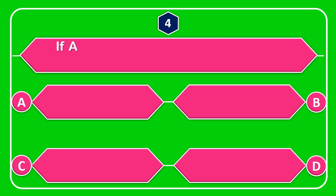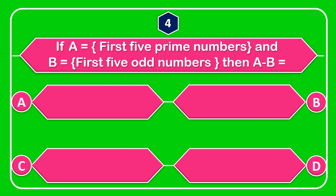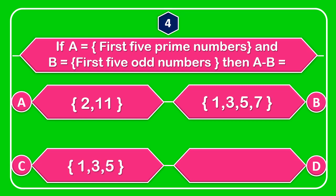Question number 4: If A is equal to the set of first five prime numbers and B is equal to the set of first five odd numbers, then A minus B is equal to?